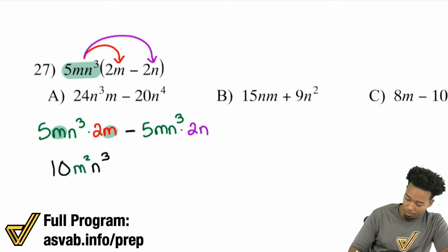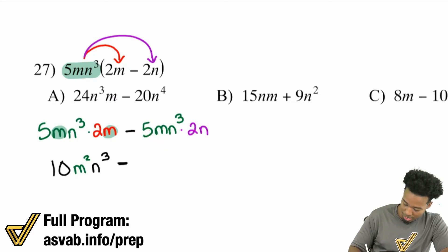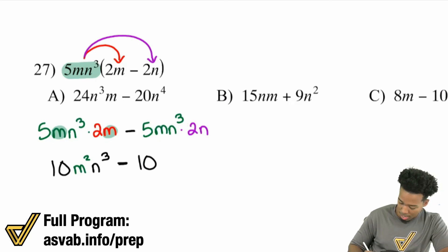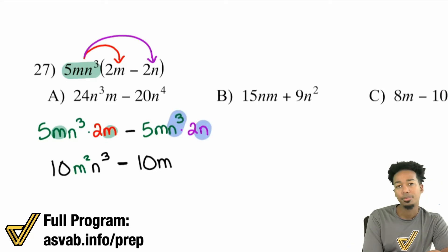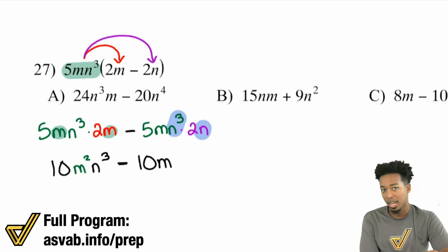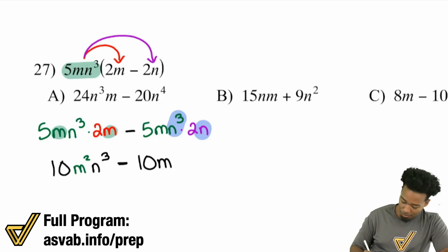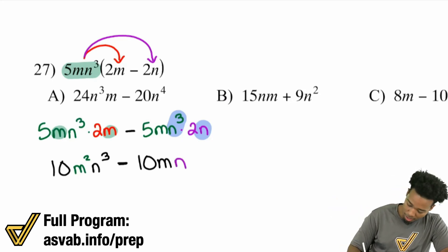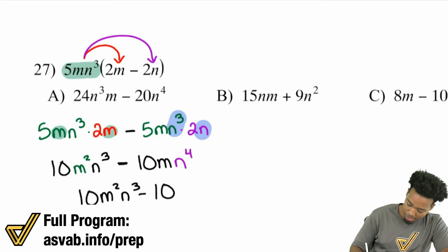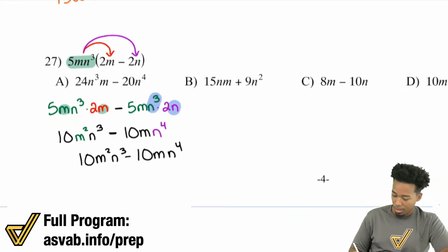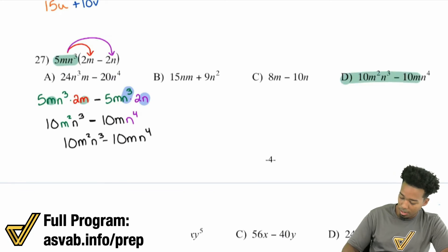For the second part: it's a minus, so positive times negative is negative. Five times two is 10, giving us negative 10. Then M times nothing else, so that's just M. Then N cubed times N: three N's multiplied with one more N is four N's total — N to the power of four. So the final answer is 10M squared N cubed minus 10MN to the power of four — answer choice D.